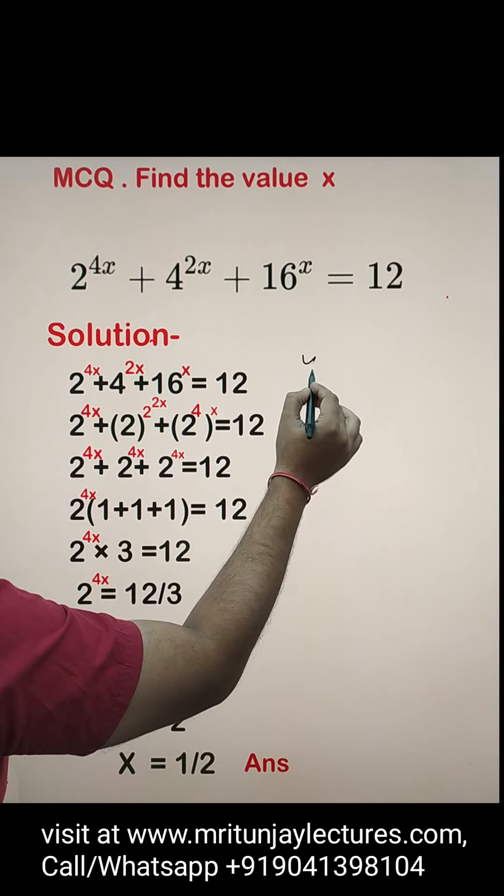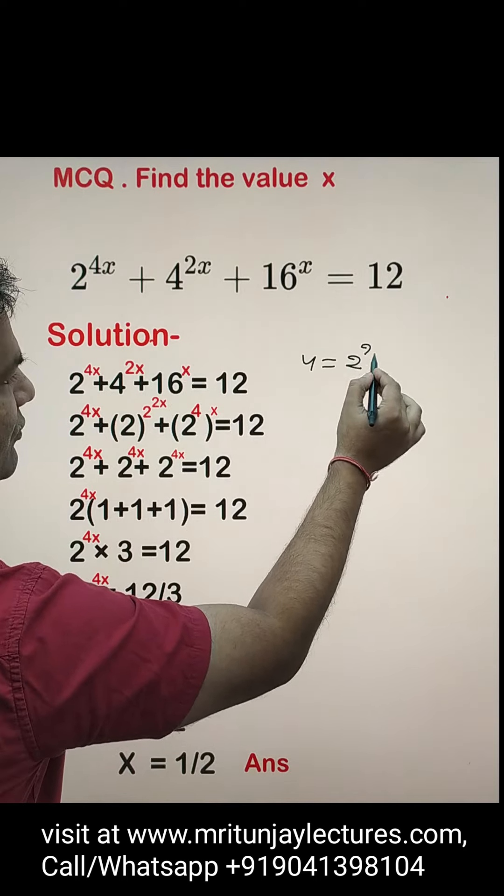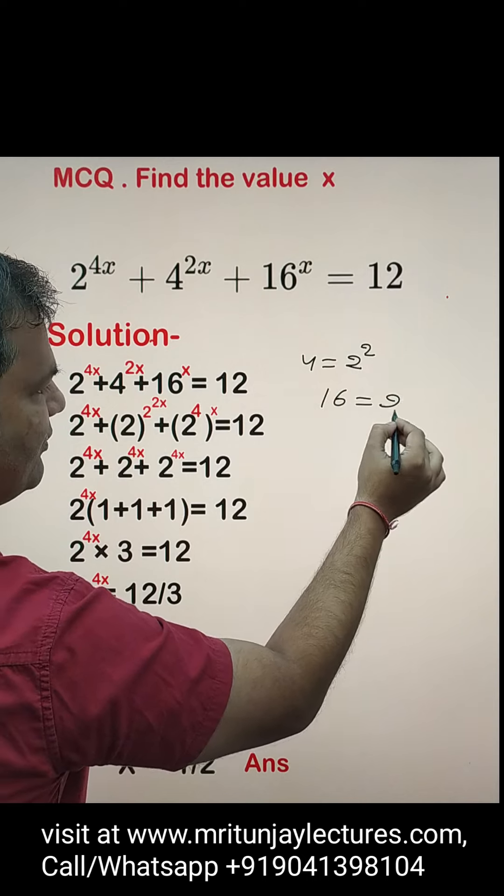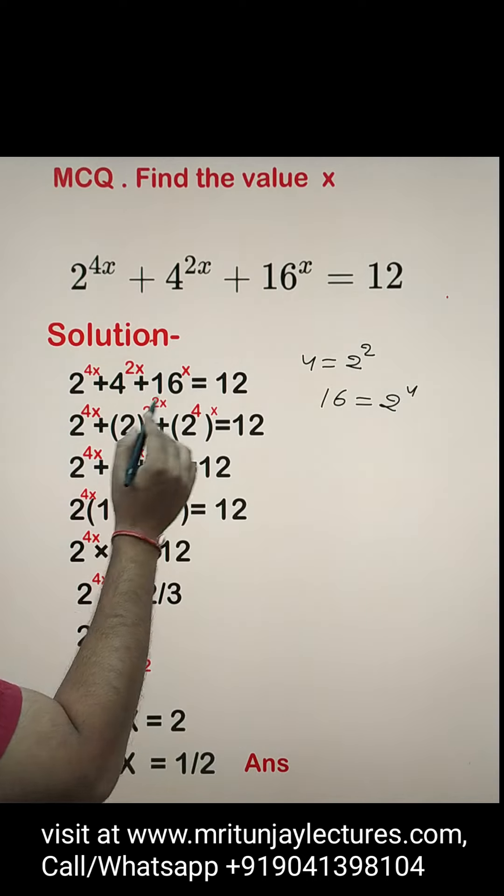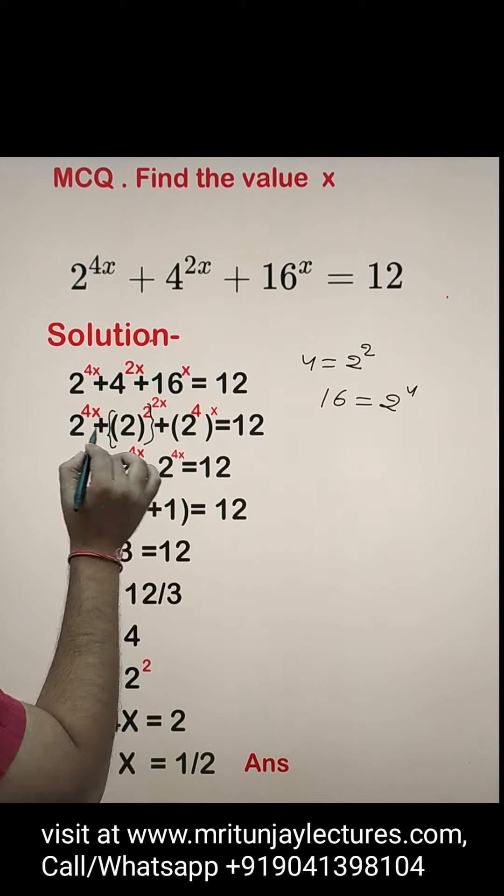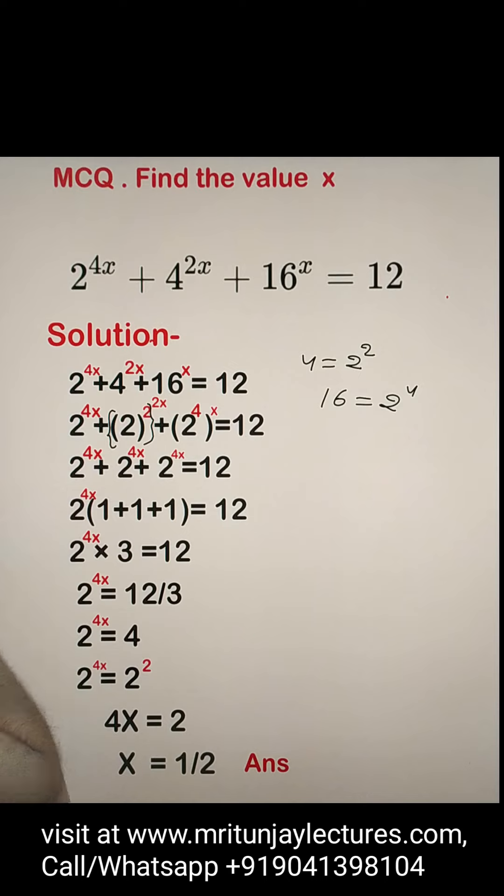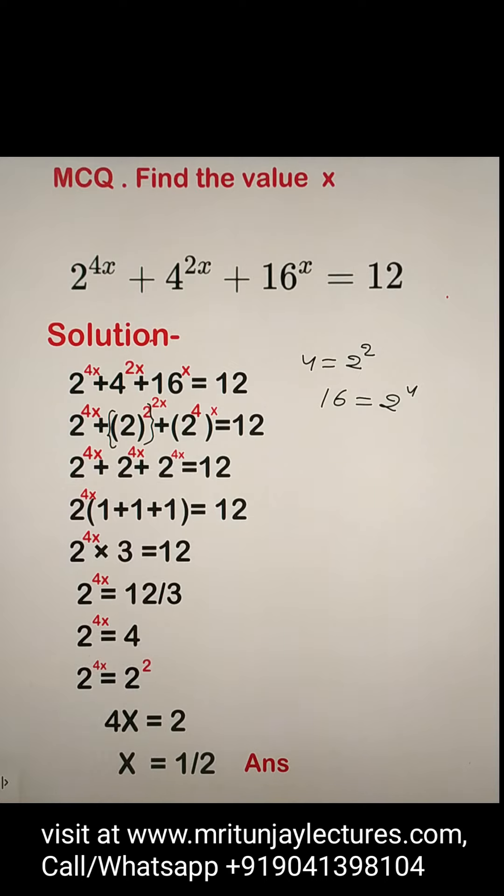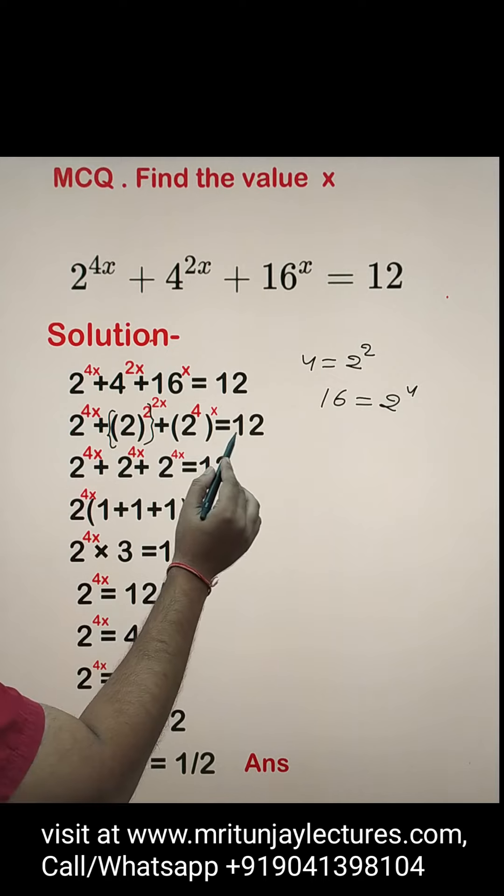I know that 4 is written as 2 to the whole square and 16 is also written as 2 to power 4. So 4 is written as 2 to power 2 to whole power 2x and 16 is also 2 to power 4 to whole power x. This will be equal to 12.